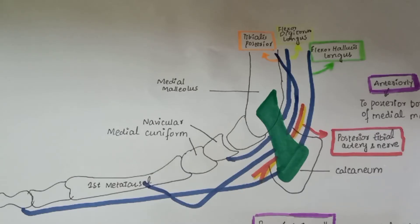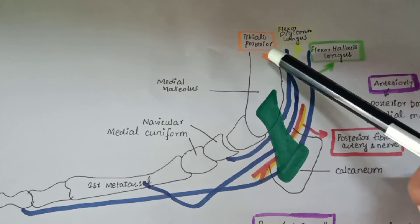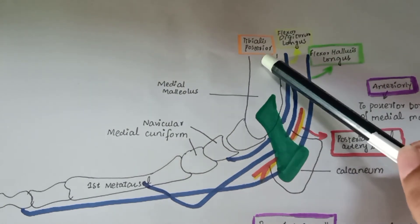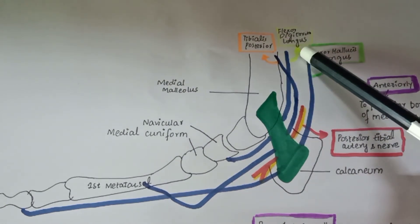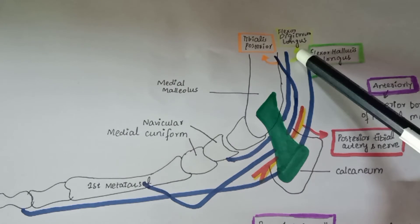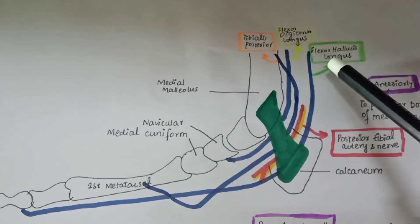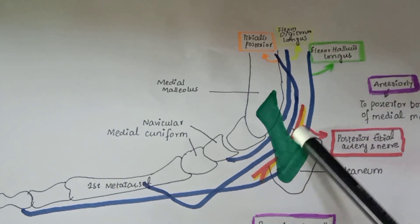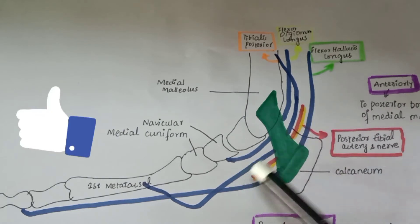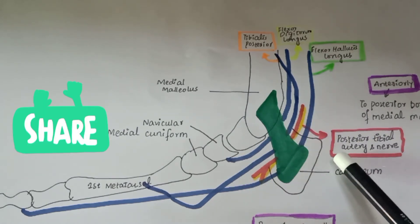Let's see the structures again. First is the tendon of tibialis posterior, next is the flexor digitorum longus tendon, then comes the tendon of flexor hallucis longus, and the last structures are the posterior tibial artery and the tibial nerve.